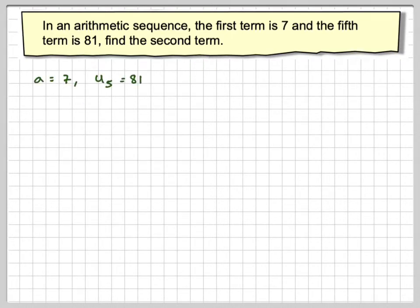OK, so we know that a is 7. We know that the fifth term is 81. What's missing is the common difference, d.